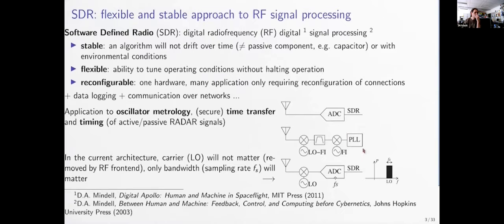For example, for frequency-modulated FM signals, a phase-locked loop acts as a frequency-to-voltage converter, producing the audio signal. The flexibility of this analog architecture is very weak because all parameters are fixed at the hardware level. For instance, the antenna acts as a bandpass filter and will have a finite bandwidth in which it properly operates.